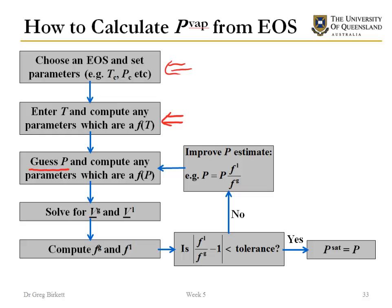Once I've done that then I can solve for my gas phase volume and also my liquid phase volume as well. Once I have those two things then I have enough information to be able to calculate my gas phase fugacity and my liquid phase fugacity. And then I check to see, are these two things similar enough to each other? So my tolerance might be, are my liquid and gas phase fugacities within one percent of each other? If no then I go up here and I improve my estimate of P. If it is within tolerance then yes I've found my saturation pressure or my vapor pressure.